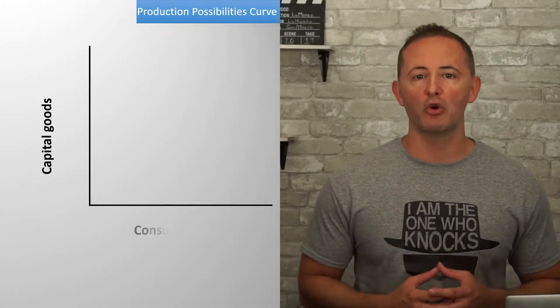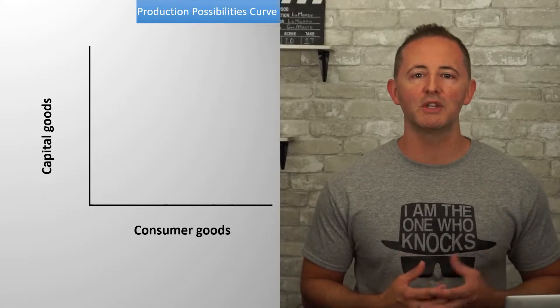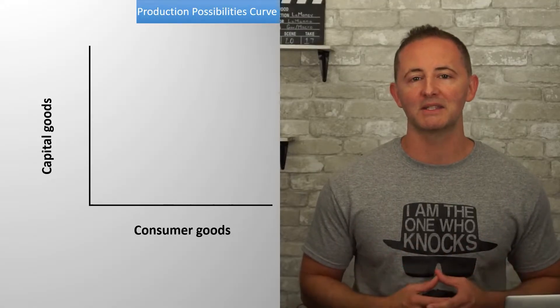We use the PPC in both micro and macroeconomics, so it has applications in both courses. The idea behind the PPC is that we're seeing what is possible for an economy to produce, just like the name implies. One of the simplifying assumptions we're going to make is that we can only produce two goods — in this case, capital goods and consumer goods.